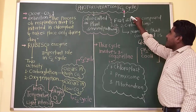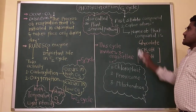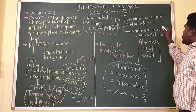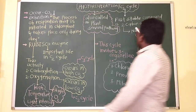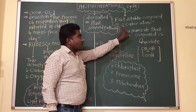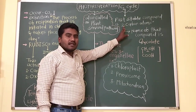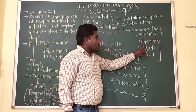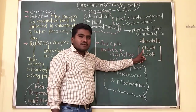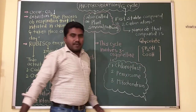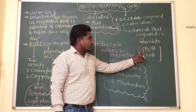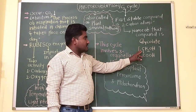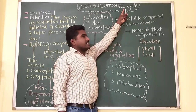Photorespiration is also called as C2 cycle. Why do we call it a C2 cycle? Because the first stable compound is of two carbon atoms. The name of that compound is glycolate. The structure of that compound is COOH and CH2OH — two carbon atoms, first and second. It is the first stable compound of two carbon atoms, that's why we call it a C2 cycle.